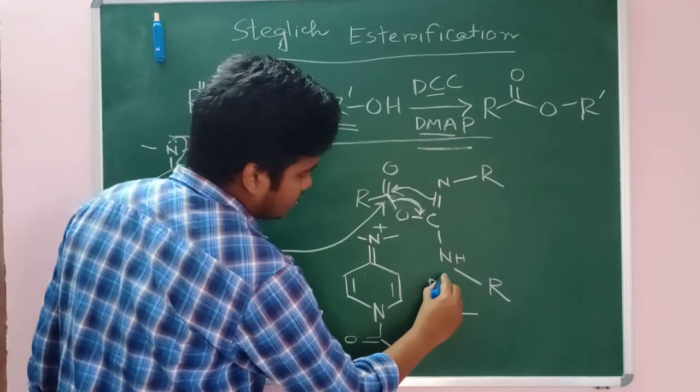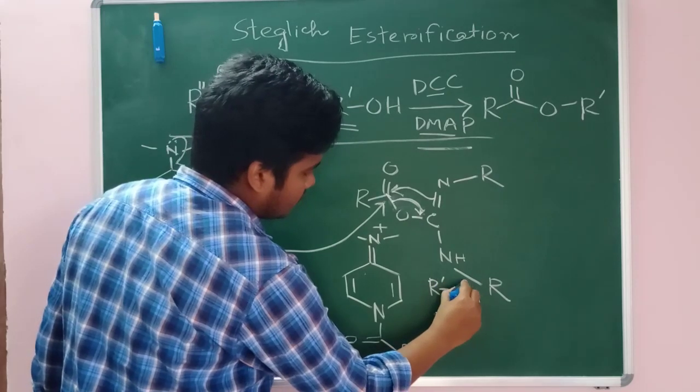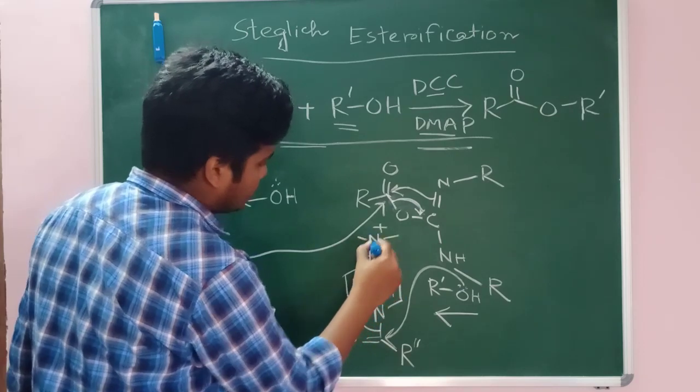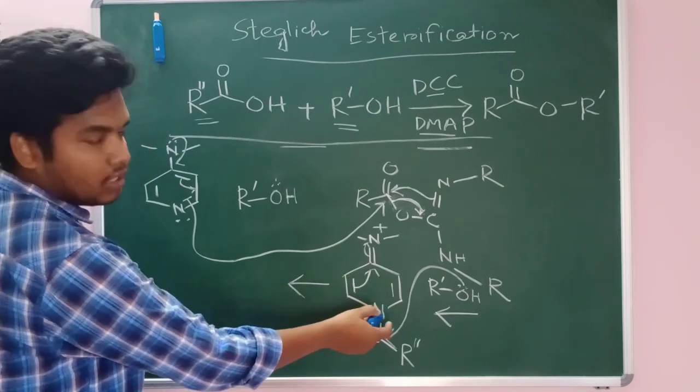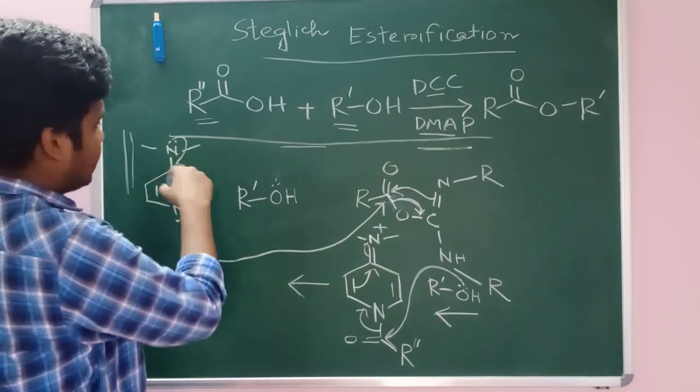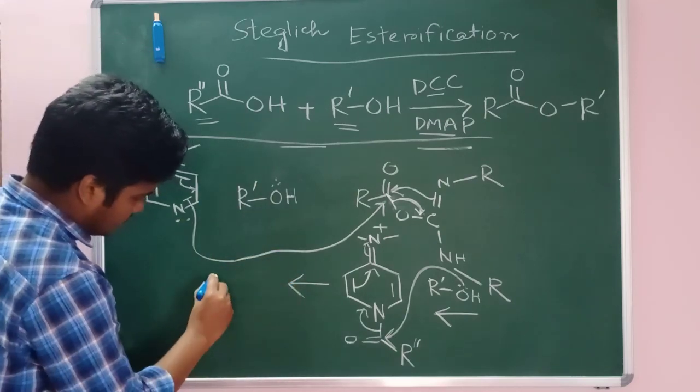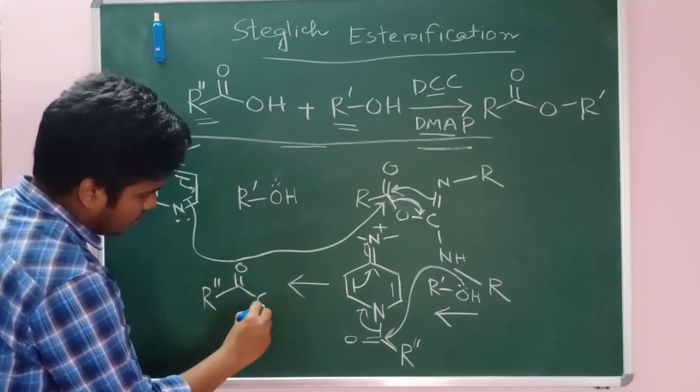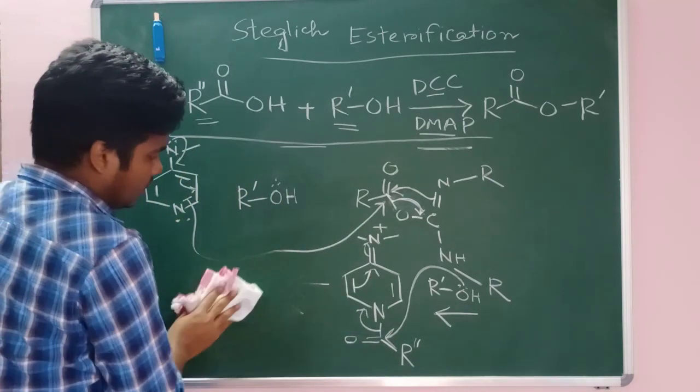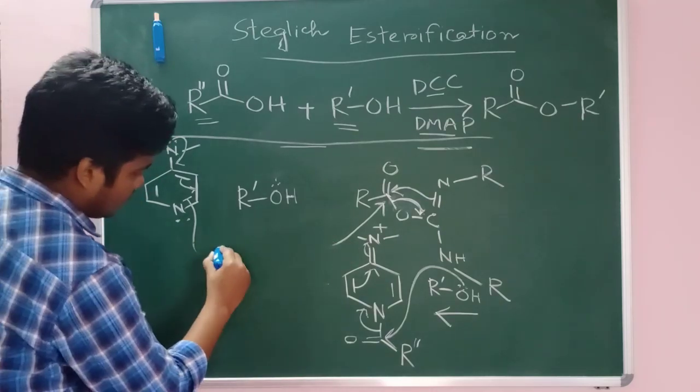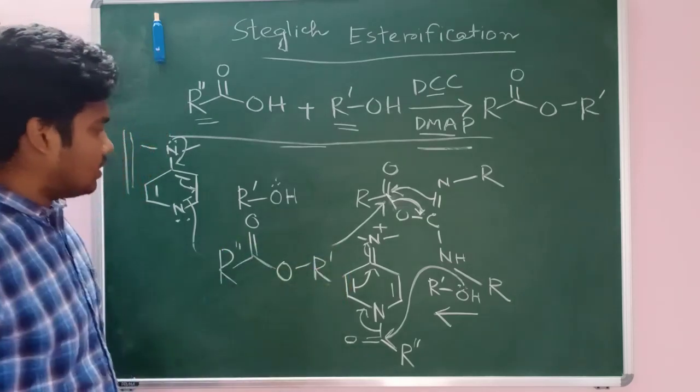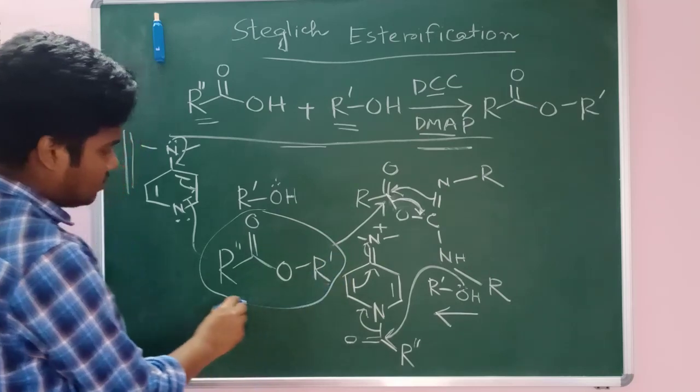Now this whole moiety is activated. Then this alcohol will come and it will add to this carbon center and it will be in conjugation. So this moiety will get back, it will give this DMAP back and again this DMAP can take place in another cycle. So if I write more clearly, we will get this ester.